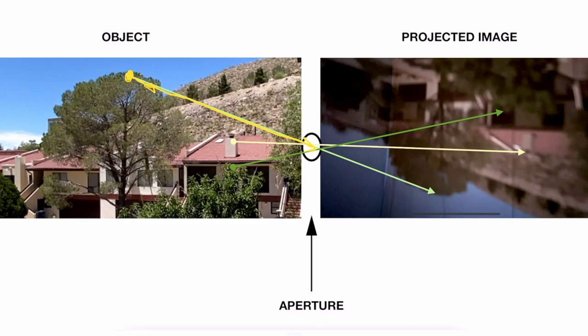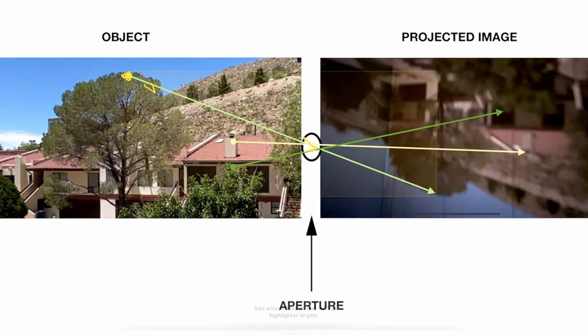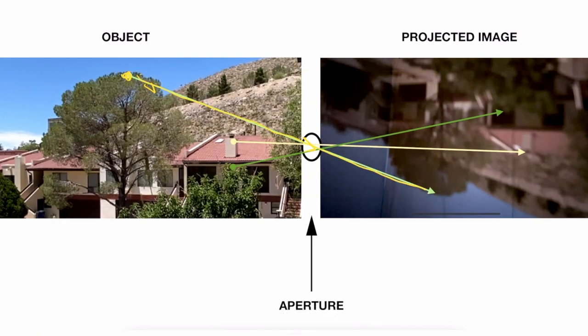And once they pass through it, they will end up hitting our projection screen. And since they travel in a straight line, the light rays that were once high up above that pine tree will end up at the bottom of our projection screen. This is why we see a completely inverted world inside of our dark room.